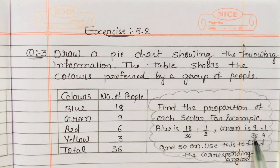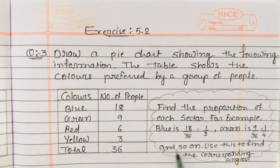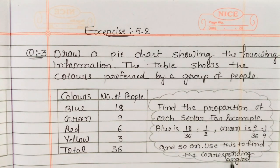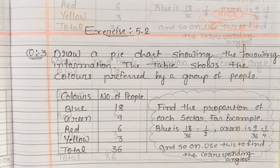Then green is 9 upon 36, which equals 1 upon 4, and so on. We use this to find the corresponding angle, that means the central angle. So first of all we have to find the central angle.